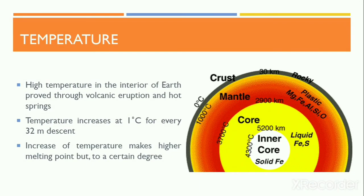Evidence from volcanic eruptions and hot springs indicates high temperatures in the interior of the Earth. It is estimated that the temperature increases at a rate of 1 degree Celsius for every 32 meters as we go deeper. The rate of increase of overlying pressure raises the melting point at a higher rate, but this has a limit. At a depth of 48 kilometers, the temperature reaches 1,100 degrees Celsius; at 400 kilometers depth, it rises to 1,500 degrees Celsius; and at 700 kilometers depth, it reaches 1,900 degrees Celsius.